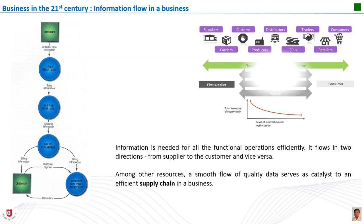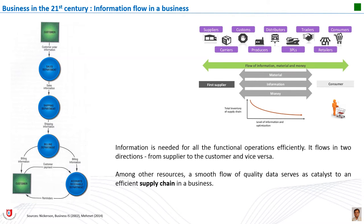The product cannot flow from supplier to end customer without a wide range of different information. Information links every component of the supply chain together and flows in two directions — from supplier to customer and vice versa. The information used in business operations flows between people within a work group or department and from one work group or department to another, and may be conveyed by voice, on paper, or by computer. When a customer wishes to purchase something, the customer transmits an order; the customer order information is received by a salesperson in the sales department, which sends information about what is being sold to the shipping department.